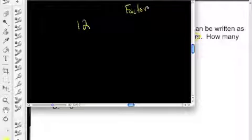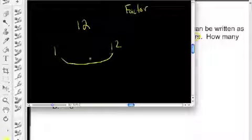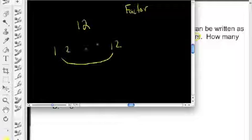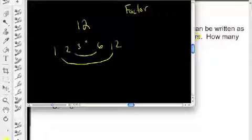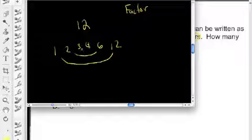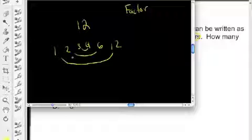Well factors are numbers that go into another number evenly. 1 divides into 12. So does 12. 12 goes into 12 once. 1 goes into 12 twelve times. So I'm going to pull out the factor pairs that are in the number 12. Okay so looks like 12 has six factors.